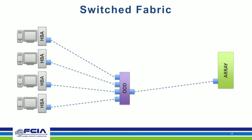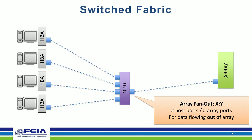Moving to topology: the most well-known topology is a simple switched fabric — a single switch connecting hosts and storage arrays. Looking at this, multiple hosts try to connect to a single port on the storage array, introducing the concept of fan-out. From an electrical engineering perspective, fan-out is what leaves a transistor — here, from the storage array's perspective, fan-out is four to one: four host ports to one array port.